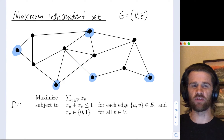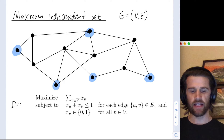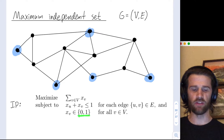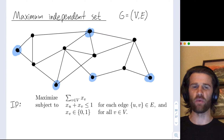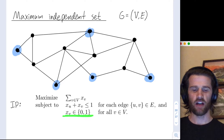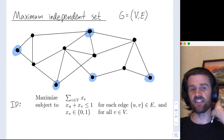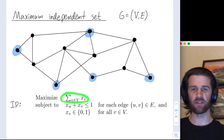We can encode this as an integer linear program. Each vertex v has a variable x_v associated to it. That variable is either zero or one: zero if the vertex is not in our set, and one if the vertex is. Because we've constrained x_v to be this integer — zero or one — that's why this is an integer linear program. We're maximizing the number of vertices in the set, which is a linear optimization function.